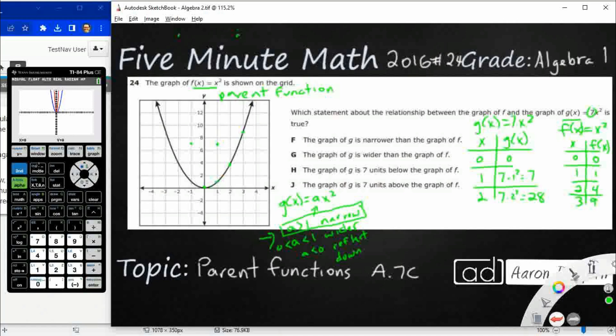So we're going to say that the graph of g is narrower than the graph of f. This right here is not correct. That's what happens when you get a plus c and you add something to the end of it. So your answer is F.